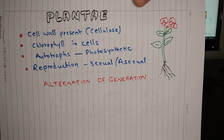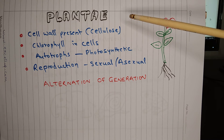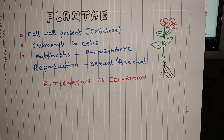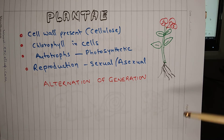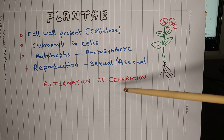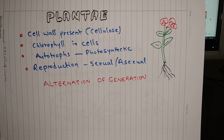Kingdom Plantae: cell wall is present in plants and is made of cellulose. Chlorophyll is present in cells responsible for photosynthesis; plantae are autotrophs that carry out photosynthesis for making food. Some plants can be semi-autotrophs like parasitic plants or insectivorous plants, which depend on insects for required protein. Reproduction can be sexual or asexual. A salient feature of plants is alternation of generation — an alternation between haploid and diploid phases in the life cycle. Haploid means half the number of chromosomes and diploid means double the number of chromosomes in cells.